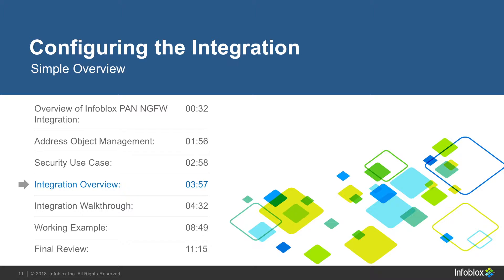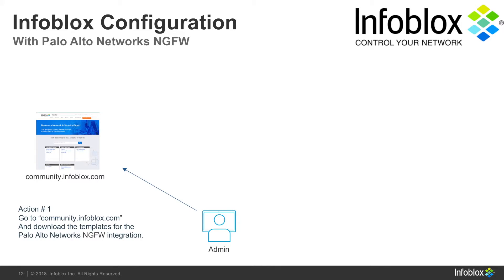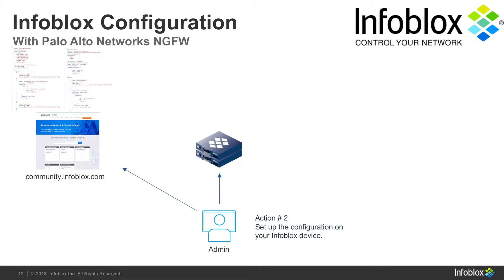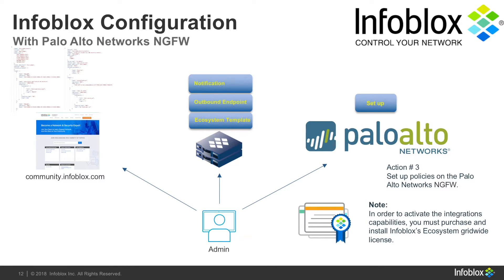Now, let's see how to set everything up. First, go to community.infoblox.com and download the templates for the Palo Alto Network's Next Gen Firewall integration. Second, set up the Infoblox grid: add extensible attributes, templates, endpoints, and notifications. Finally, set up the policies and lists on the PAN side. You will need to purchase and download Infoblox's ecosystem grid-wide license to activate the integration's capabilities.